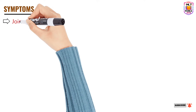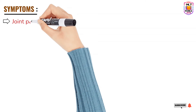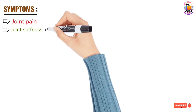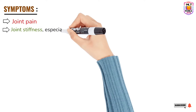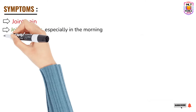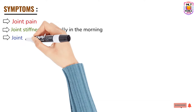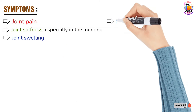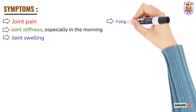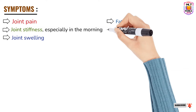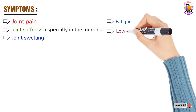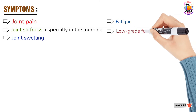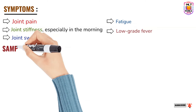The symptoms on which doctors will order this test include joint pain, joint stiffness especially in the morning, joint swelling, fatigue, and low-grade fever. Based on these symptoms, doctors will write the anti-CCP test.